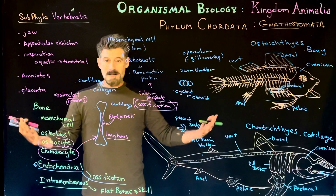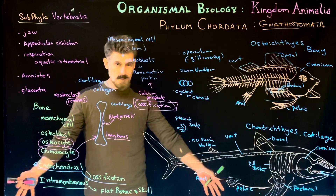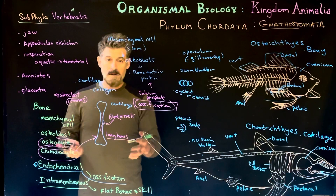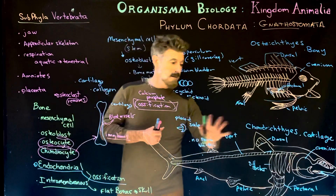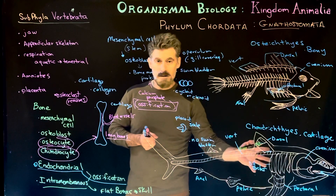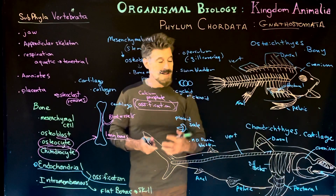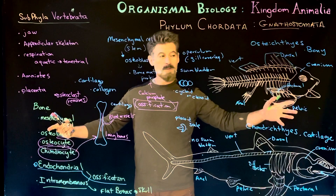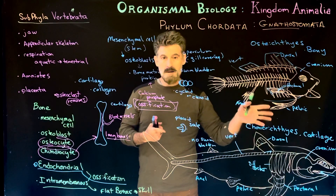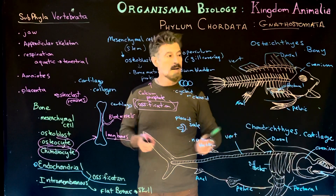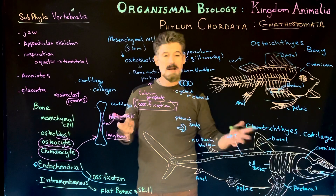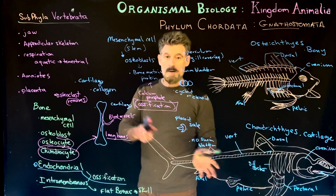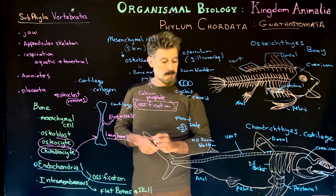Long bones — the bones of the appendages like our arms and legs — are mostly formed through endochondral ossification, where they're set down first in cartilage and then replaced. We can see that this doesn't happen in the chondrichthyes; they just stay cartilage. But ancestrally, this is how the first skeletal systems appear to have worked — cartilage first, then ossification to toughen it up. This becomes even more important as organisms start to move from water onto land, where appendages must bear the weight of gravity.